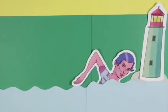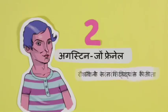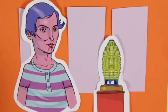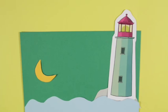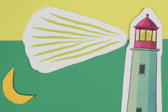प्रकाश तरंगों की तरहां आगे बढ़ता है। और इस बारे में शोध करते-करते उन्होंने एक लेंस बनाया जिसे अब उन्हीं के नाम पर फ्रेनल लेंस कहते हैं। फ्रेनल लेंस रोशनी को कोहरे में बहुत दूर-दूर तक पहुँचाने में मदद करता है। जहाजों को किनारे की जमीन और चट्टानों से बचाने में यह बहुत काम आया।